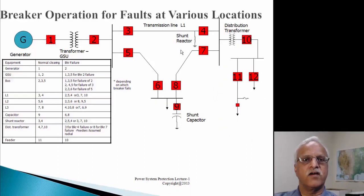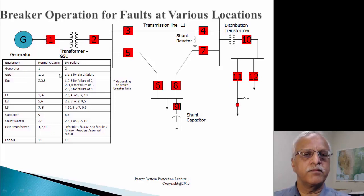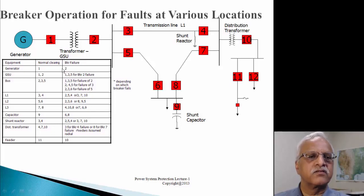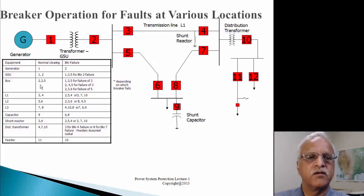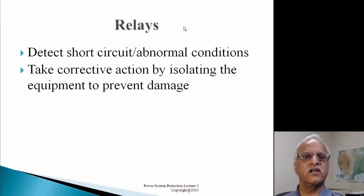Let's look at breaker operations for faults at various locations. For generator 1, we open breaker 1. For the GSU, we open breakers 1 and 2. If breaker 1 fails, we open breaker 2. For bus protection, we should operate breakers 2, 3, and 5. If breaker 3 fails, we send information to the remote end that breaker 3 failed for a bus fault, and we open breaker 4. The relays essentially detect short circuits or abnormal conditions and take corrective actions by isolating equipment to prevent damage.